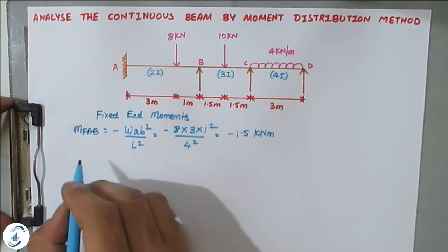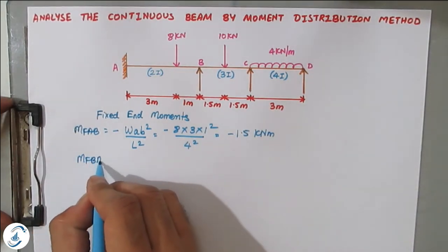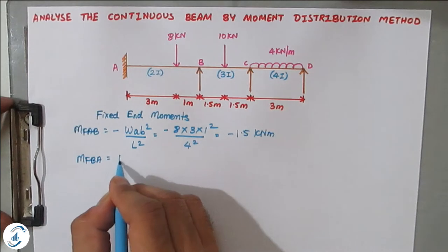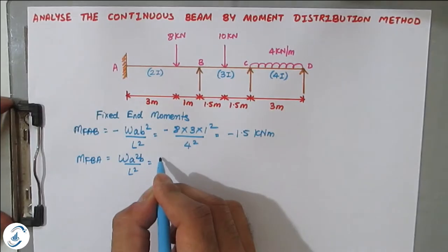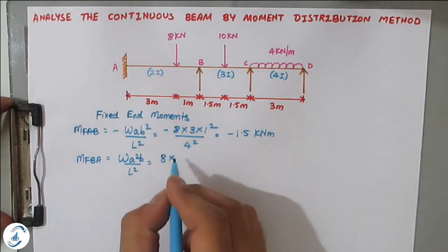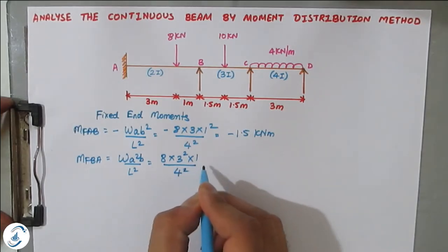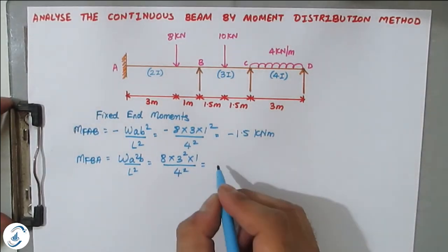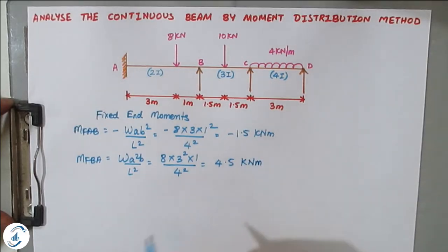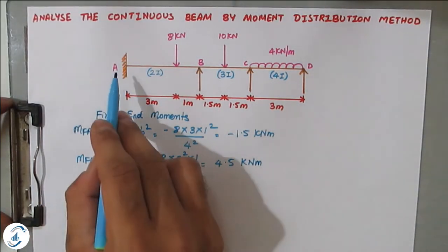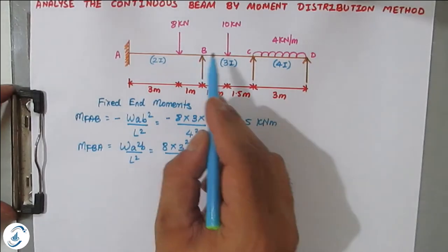MF_BA is clockwise, so positive: W·a²·b / L². With W = 8, a = 3, b = 1, L = 4: 8 × 3² × 1 / 4² = 4.5 kN·m. These are the two fixed end moments for span AB.